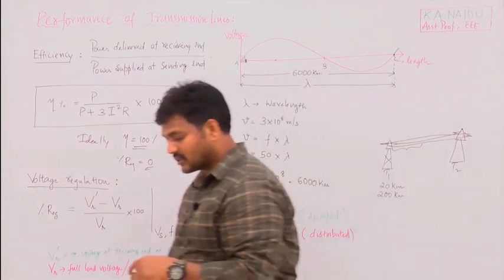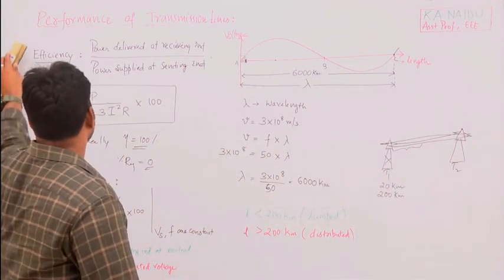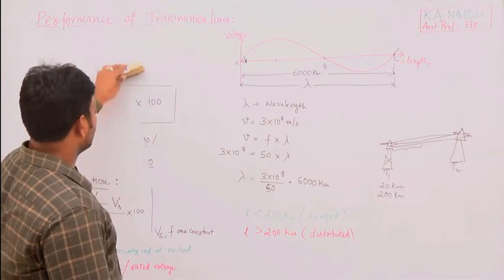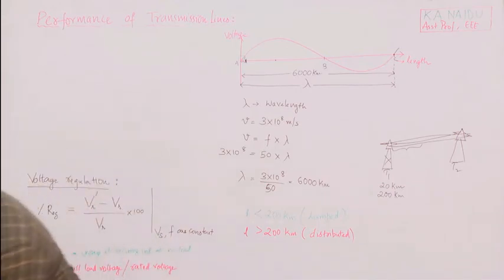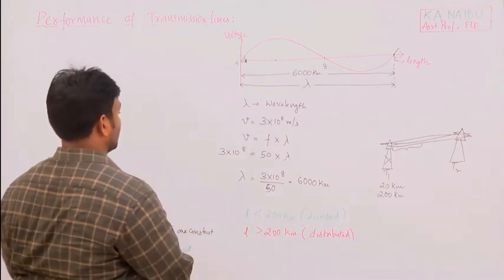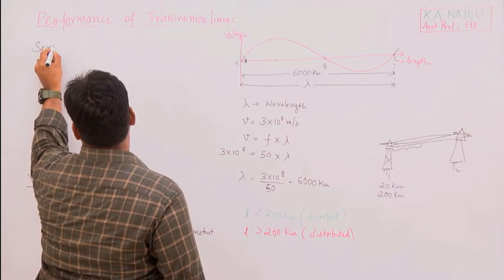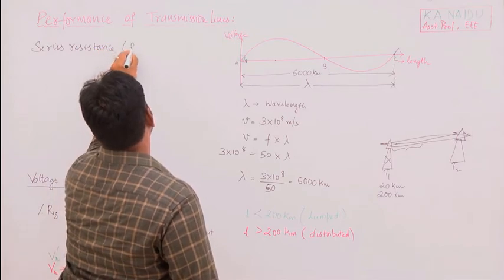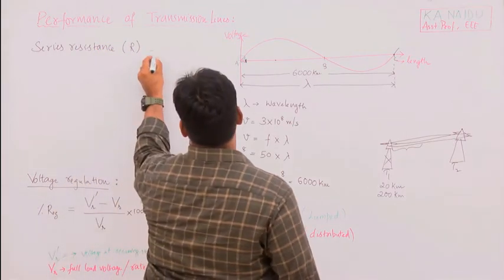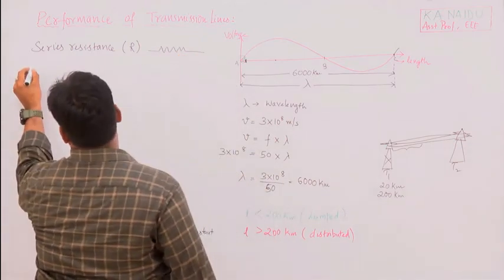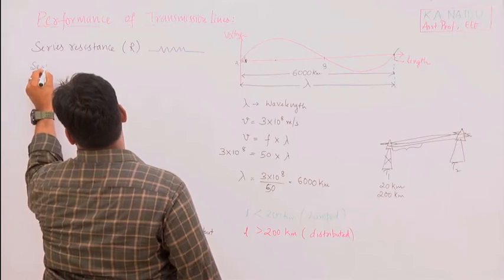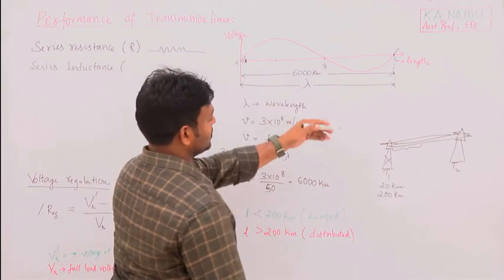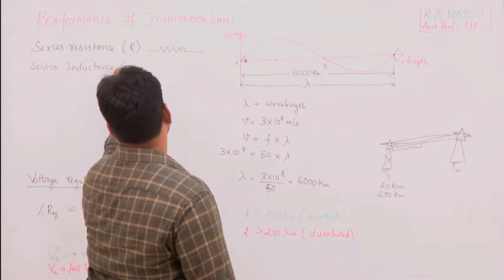There are four parameters in a transmission line. The first is series resistance, denoted R, which equals ρL/A. The second is series inductance L, which arises due to magnetic flux linkages between conductors carrying current.